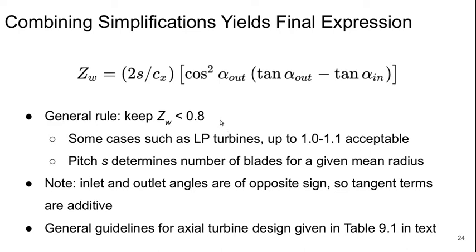In some cases, we'll let it be a little higher, like in a low-pressure turbine, up to around 1 is okay. And then the thing that we won't know is the pitch, S. And if we know the mean radius of our machine, once we have S, we can determine the number of blades needed.